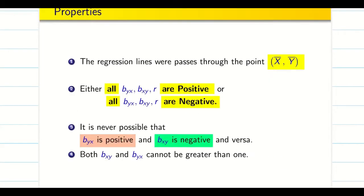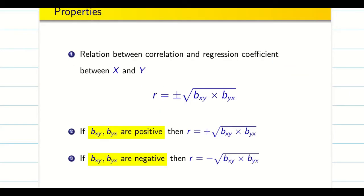Let us go into the problem. Before we go into the problem, just recall the properties. Regression lines always pass through the mean x̄ and ȳ. All the values—that is byx, bxy, and correlation r—are all positive or all negative. If both are positive, then r is positive. If both are negative, then r is also negative.